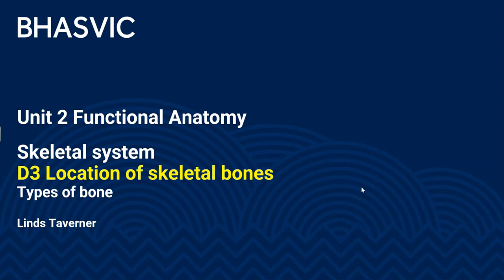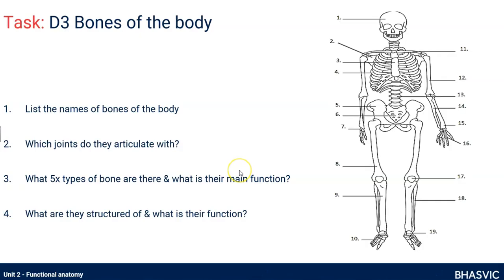This Speed Export Exercise Science video is for unit two functional anatomy, and we are looking at the skeletal system specifically D3, the location of skeletal bones. But we're actually purely in this video focusing on the five types of bone. Could you name the bones of the body, but could you also know what type of bone they are, how they're structured and what their main function is? That's really what we want to address in this video.